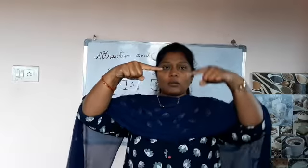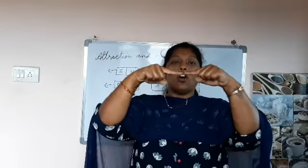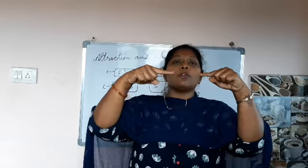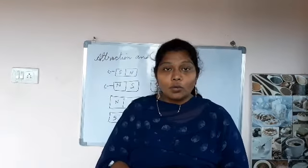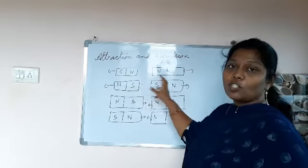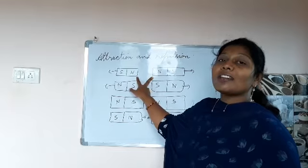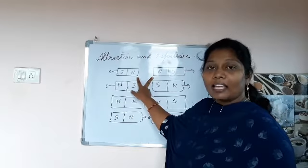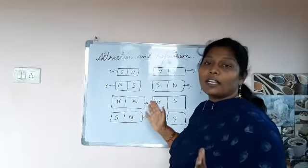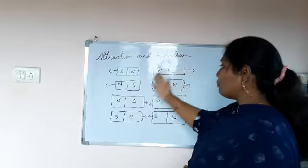When both magnets face the same direction — north facing north and south facing south — what will happen? When the north pole faces another north pole, they will move apart. Because like poles repel, when the same kind of pole is kept together they will not attract — they move away. This is called repulsion. Both north-north and south-south poles repel; they move apart.